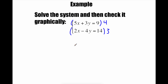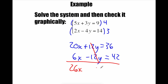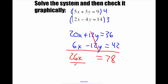If we distribute the 4 through the top equation, we get 20x + 12y = 36. And if we distribute the 3 through the bottom equation, we get 6x - 12y = 42. Adding these equations together: 20x and 6x is 26x, the positive 12y and negative 12y cancel each other out, and the right-hand side gives us 78. Dividing by 26, we get an x value of 3.